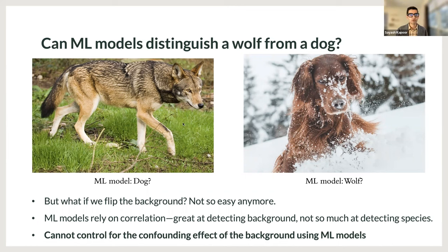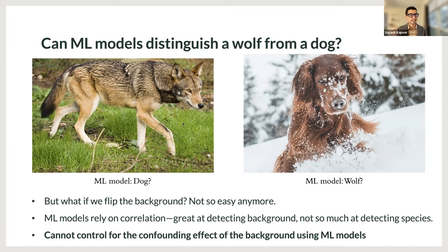This is an example of what I'm going to call leakage throughout the presentation. While this example might seem silly — the stakes are pretty low in a wolf versus dog classification setting — imagine if this happens in a much higher stakes situation. We could have the FDA approve snake oil because people believe they found a magical cure using AI, when there is actually a confounding factor in the use of these algorithms.